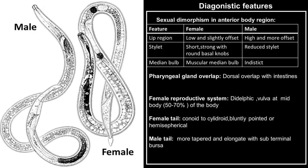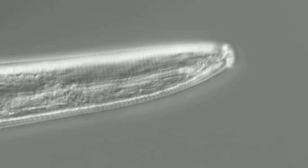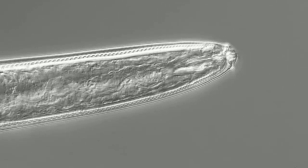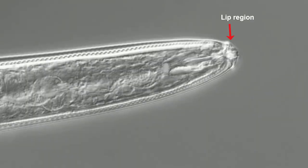For this practical exercise, we are going to use a female nematode. Let us start by putting the anterior end of our nematode in focus. Here we have the lip region of this nematode, and as you can see, the lip region is low and slightly offset. In the same field, we also have the stylet of this nematode, which is robust and has round basal knobs at its base.